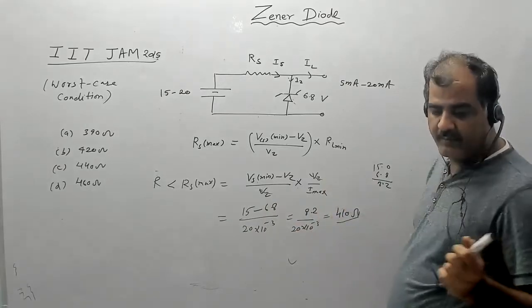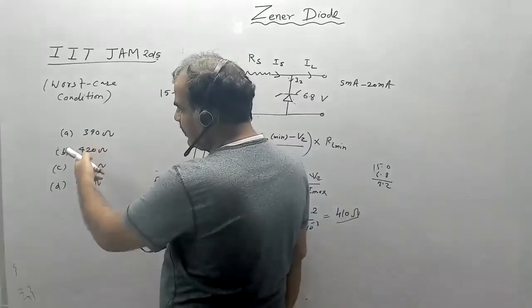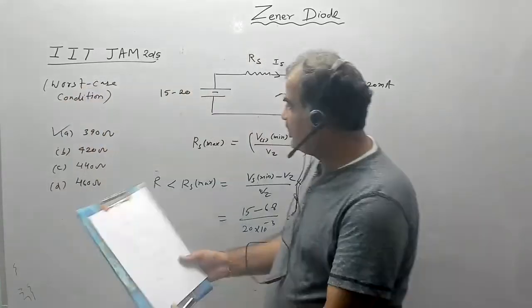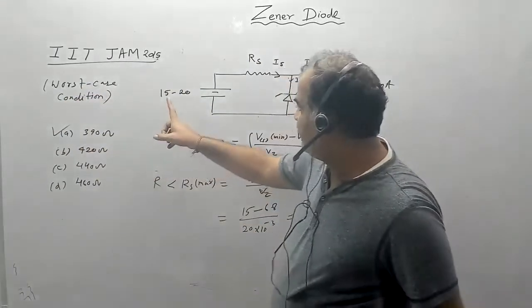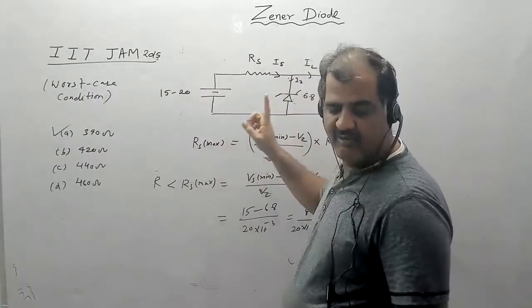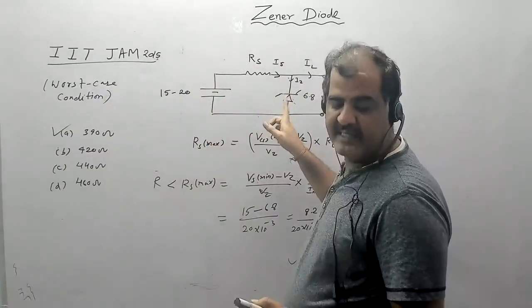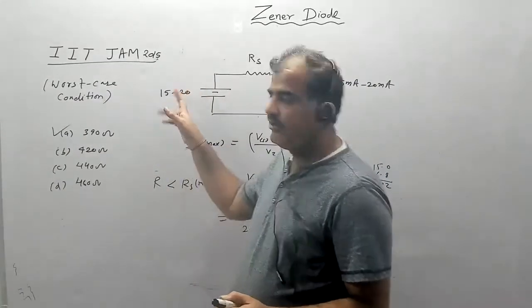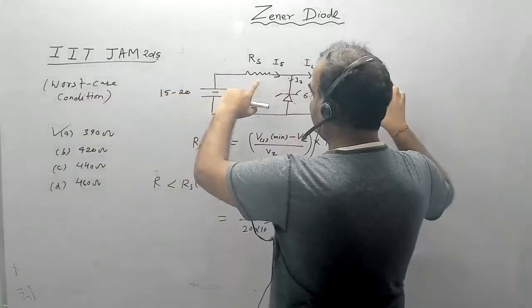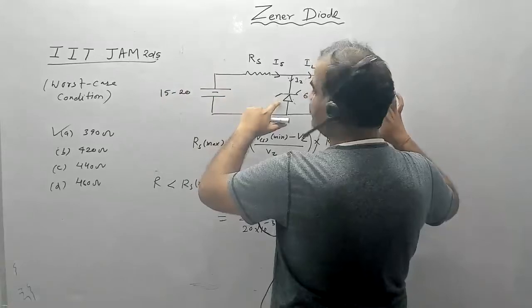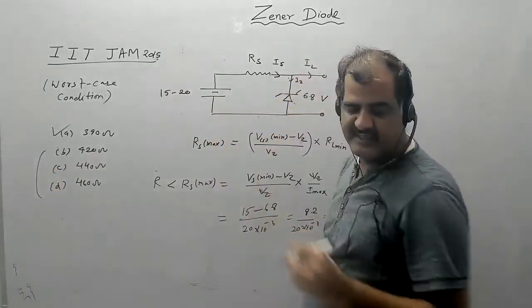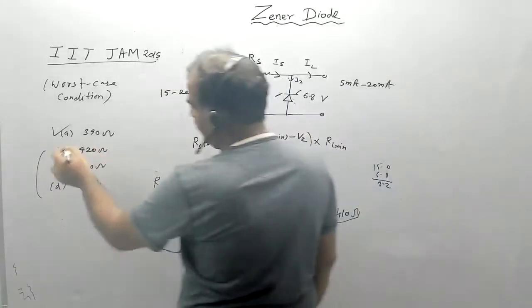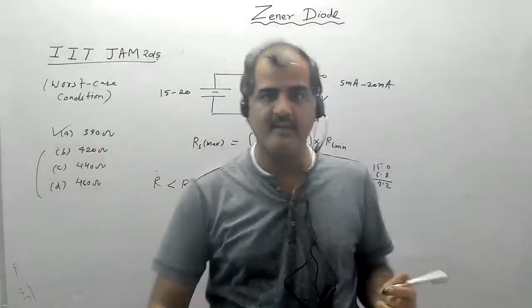That means the resistance should be less than 410 ohm. In the question, the option 390 ohm is given, and all other options have resistance greater than 410 ohm. If you use 390 ohm, for all given conditions the diode will be in breakdown and conducting. Using any other resistance, the diode will not be conducting in some conditions. So the correct option is Rs should be less than 410 ohm, and option A — 390 ohm — is the correct answer. Thank you.